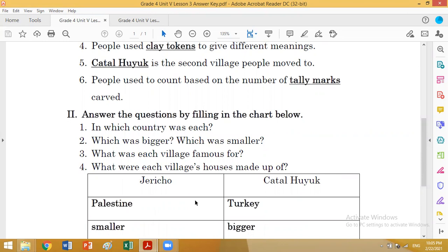Number two: Which was bigger and which was smaller? Number three: What was each village famous for? Number four: What were each village's houses made up of?